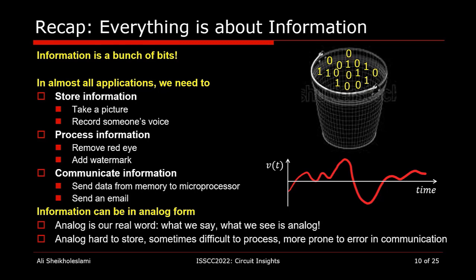Information can be in analog form, like a function of time. Our real world is indeed analog — what we say, what we see, is analog, and we need to interface to the real world. But analog information is hard to store, sometimes difficult to process, and it is more prone to error in communication.